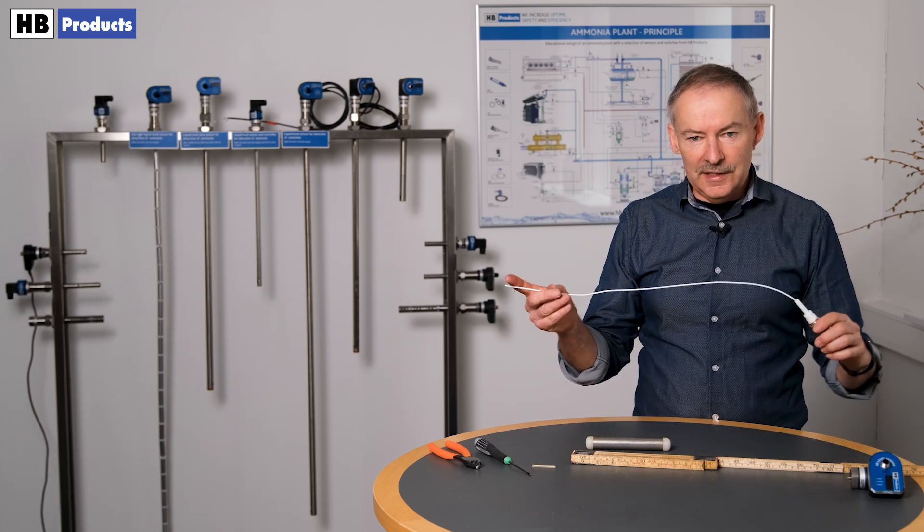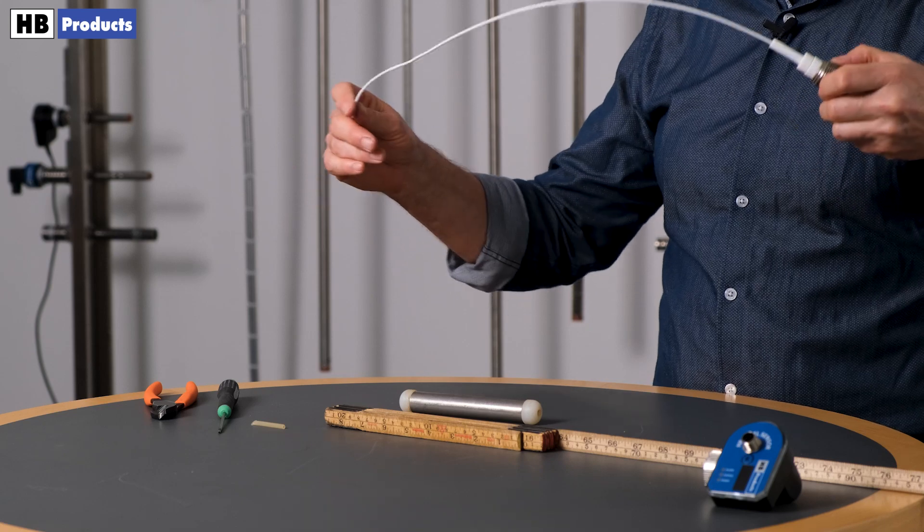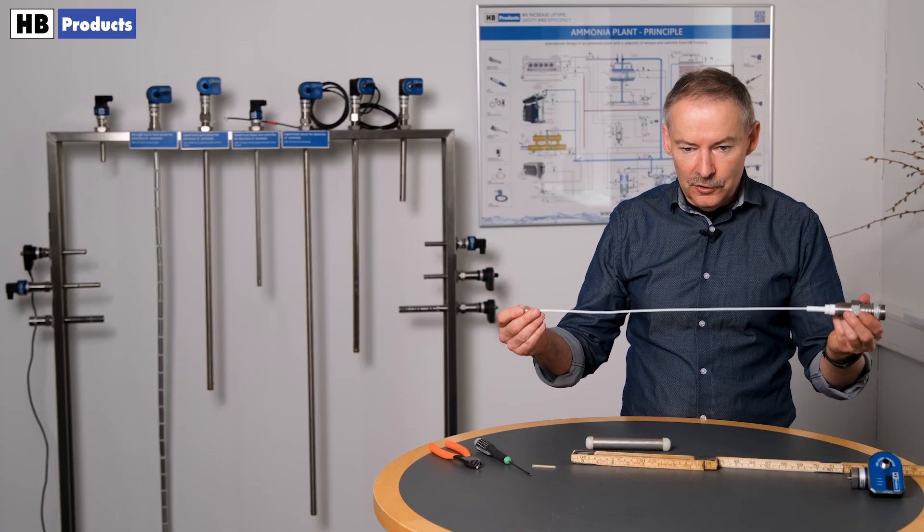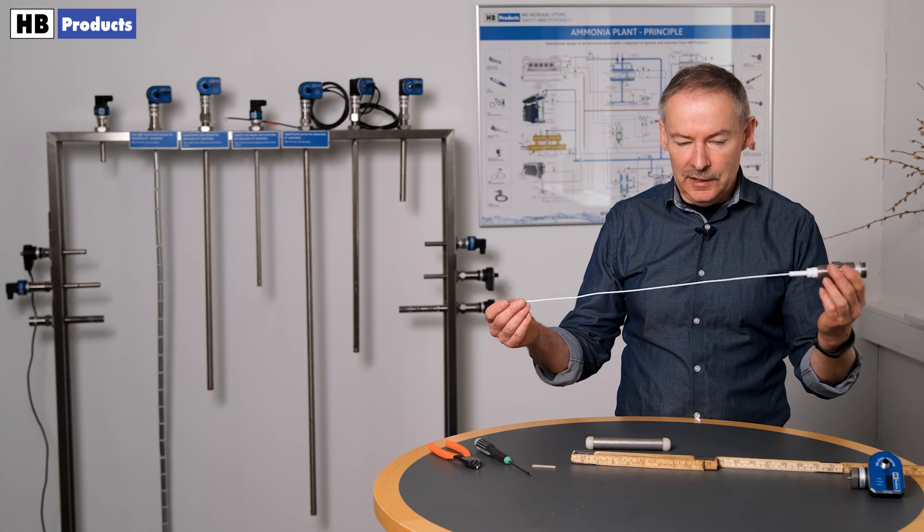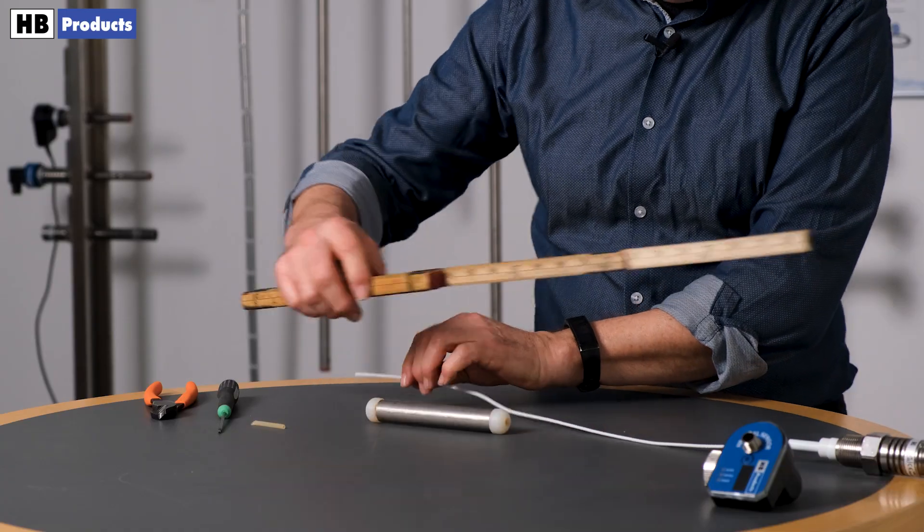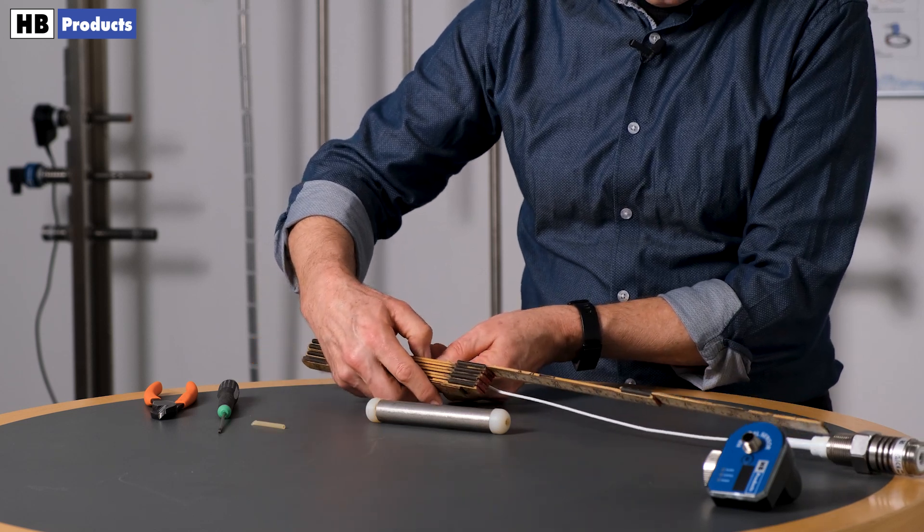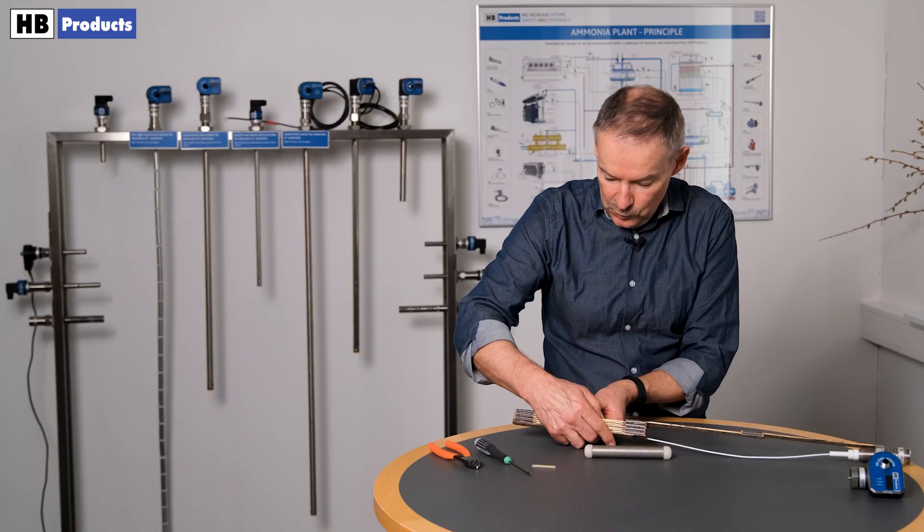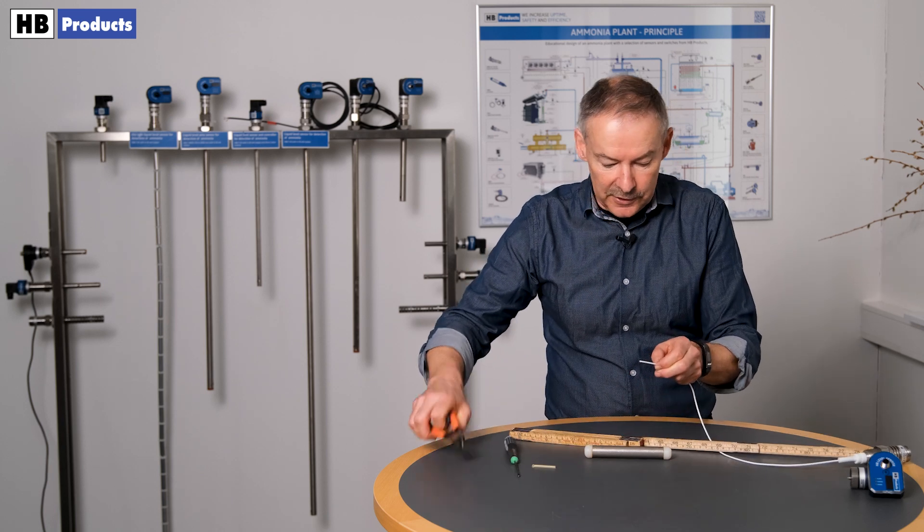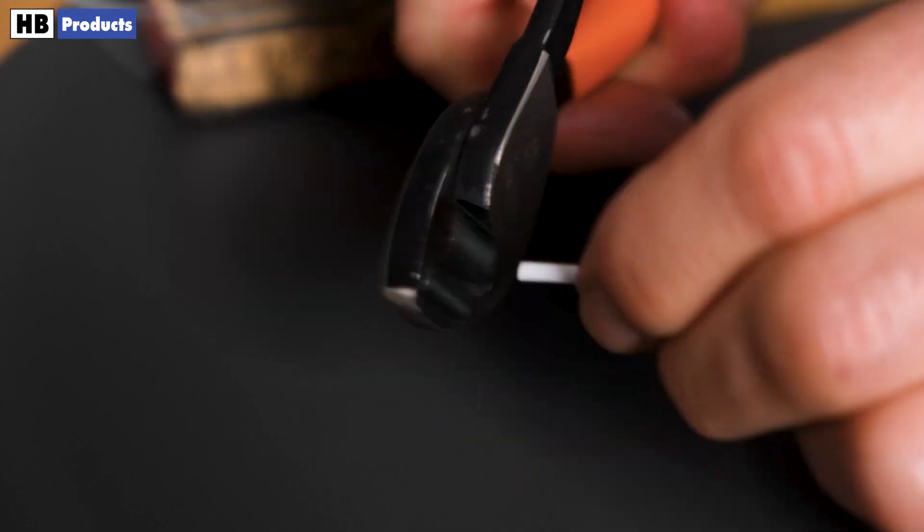The wire is normally delivered with a length of four meters or even six meters. You need to measure the required length and then cut the wire to where you like. You simply cut the sensor with a wire cutter like this.